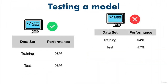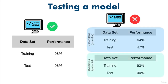A good model will yield similar results on the training, validation, and test sets. It's not uncommon to see a slight decline in performance from the training and validation set to the test set — for example, your model might achieve 98% accuracy on the training data set and 96% accuracy on the test set. What you should be worried about is if the training set performance is dramatically higher than the test set, also known as underfitting, and if the test set performance is higher than the training set performance, also known as overfitting.